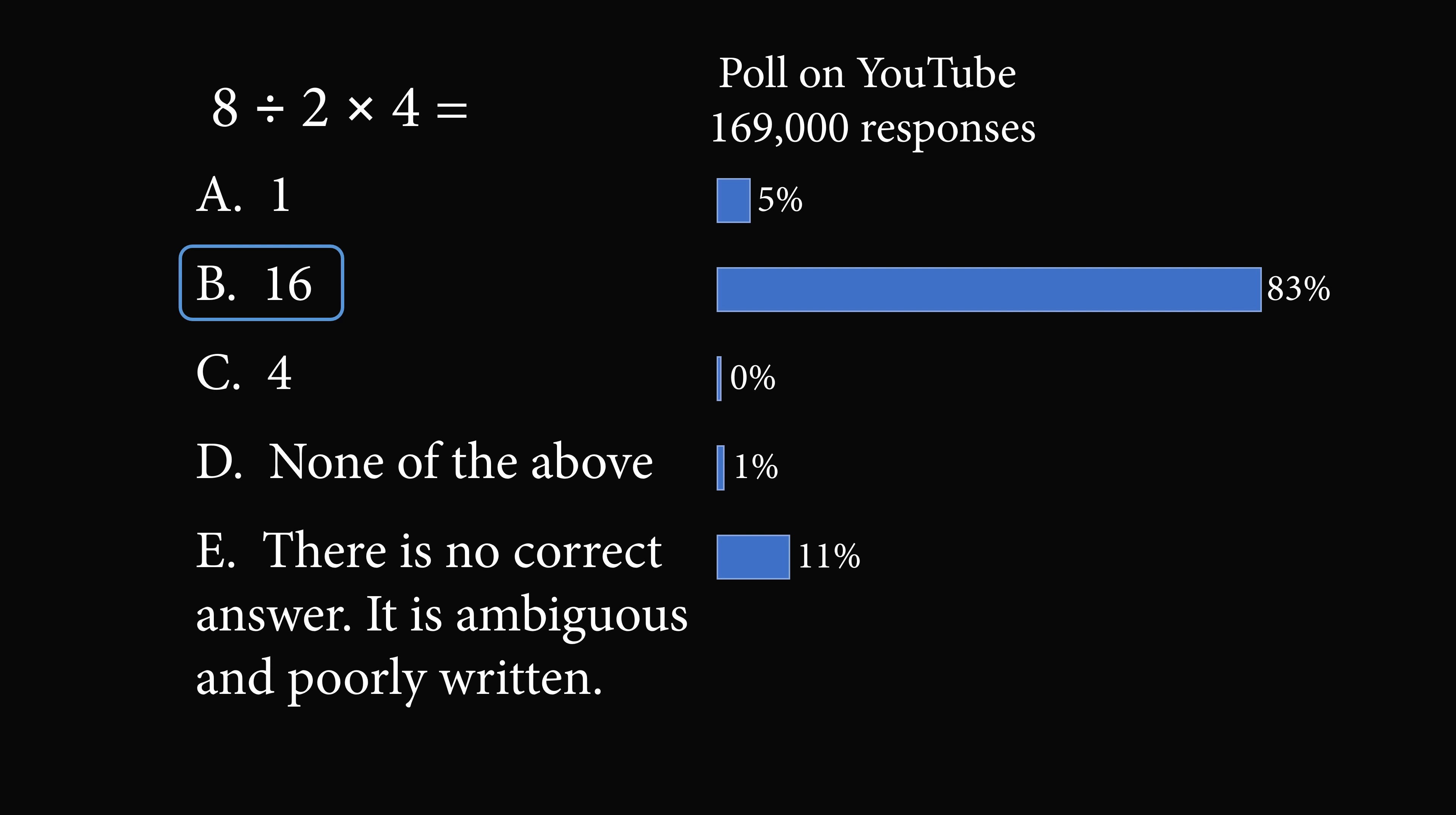Presumably, they would say the answer is either 1 or 16. But even then, if you look at modern usage, overwhelmingly, most people are taught to go from left to right and give the answer of 16. 83% is a lot of people to agree on a divisive topic.